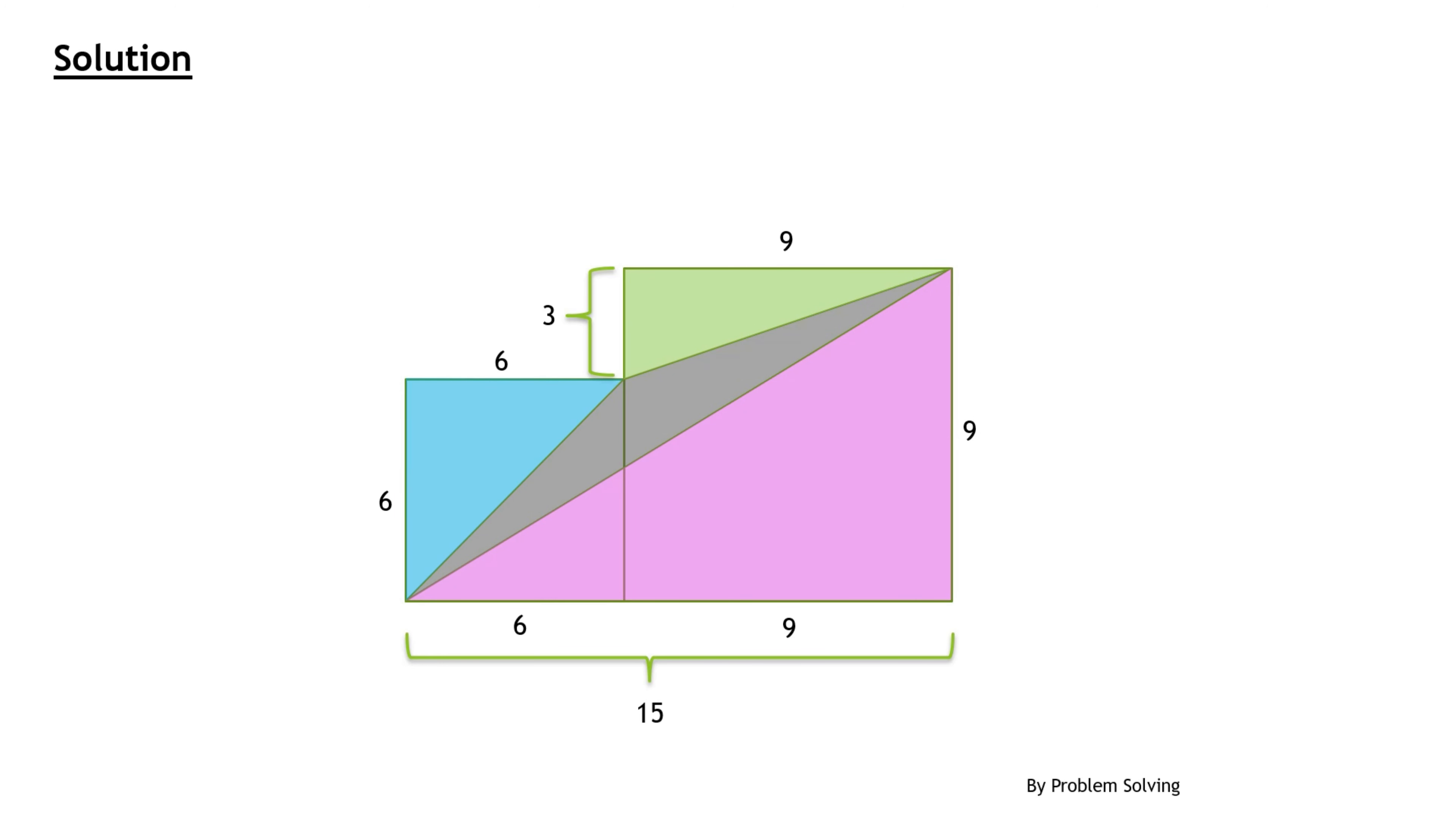Into 4 different triangles. We know that the area of the shaded part in grey is the total area minus the area of the blue, green and pink triangles.